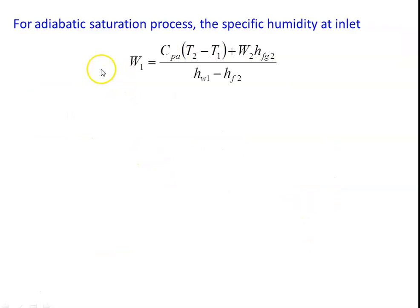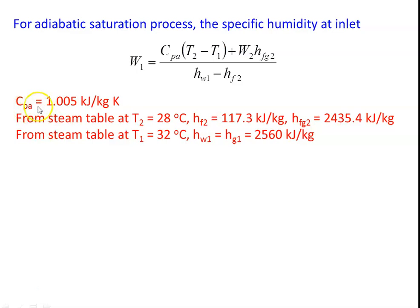At the inlet of the adiabatic saturation process, we calculate specific humidity W1 using the derived equation: CpA × (T2 − T1) + W2 × hfg2, divided by (hW1 − hf2). CpA = 1.005 kJ/kg·K. From the steam table at 28°C: hf2 = 117.3 kJ/kg, hfg2 = 2435.4 kJ/kg. From the steam table at T1 = 32°C: hW1 = hg1 = 2560 kJ/kg. All these values are taken from the steam table.